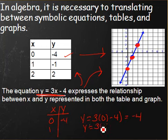When x is one, we get y is equal to three times one minus four, which is equal to negative one, which also satisfies our table and our graph.